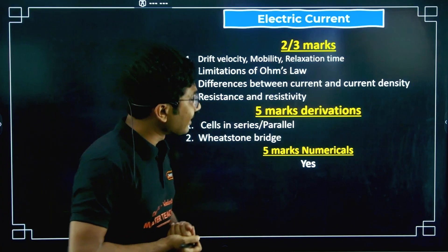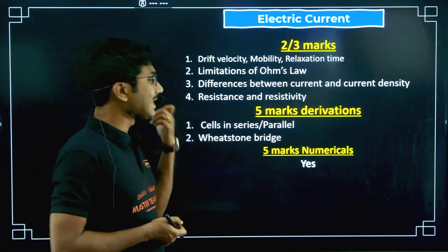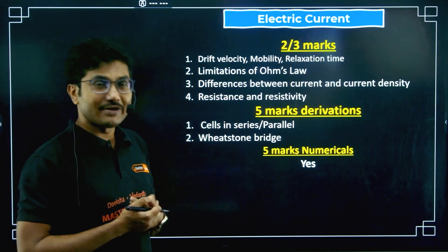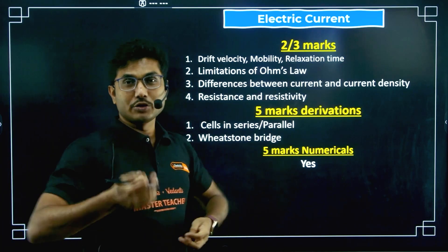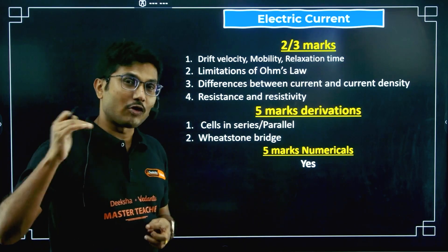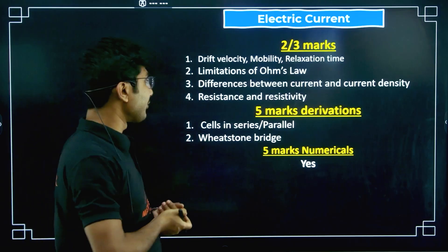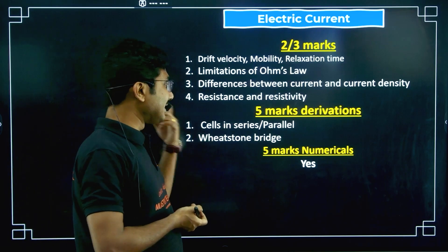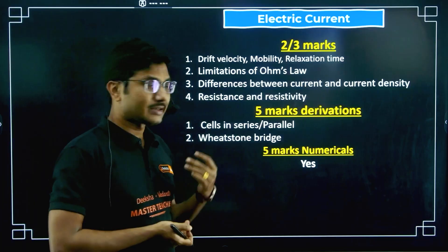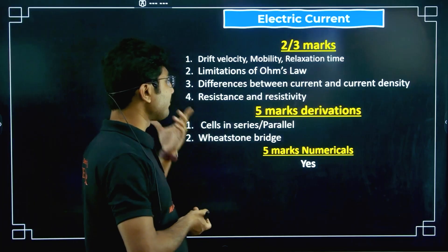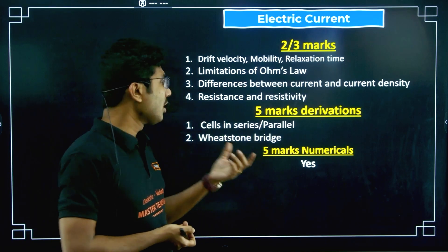Difference between current and current density is another important question. Resistance and resistivity are very very important — what is resistance, what is resistivity, and the formula R equals rho L by A. From that formula you might face some numerical questions as well. Cells in series and cells in parallel are five-mark derivations. Students find them slightly tricky but they are very common and might come in your midterm exam.